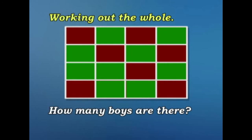How many boys are there? Let's count the red fractions. 1, 2, 3, 4, 5, 6, 7. Each fraction represents 2 pupils. So 7 times 2, that's 14. There are 14 boys in the class.